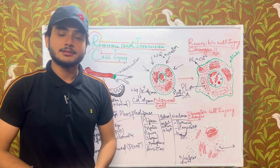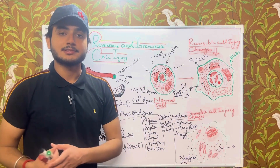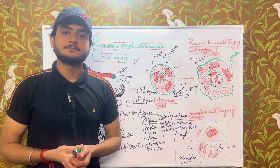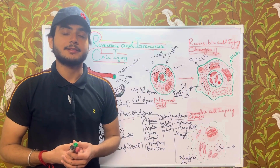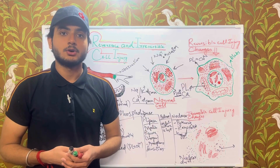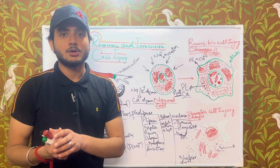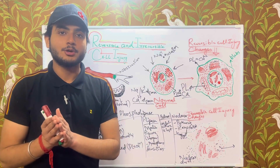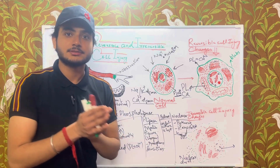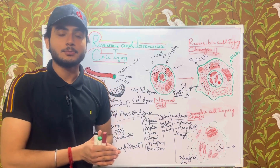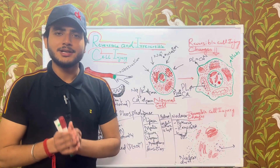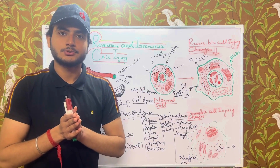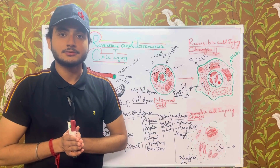With this, we are done with reversible as well as irreversible cell injury. After cell death, morphological changes occur — these could be necrosis, apoptosis, pyroptosis, or ferroptosis. We'll discuss all these changes in the next video. Thank you for watching.